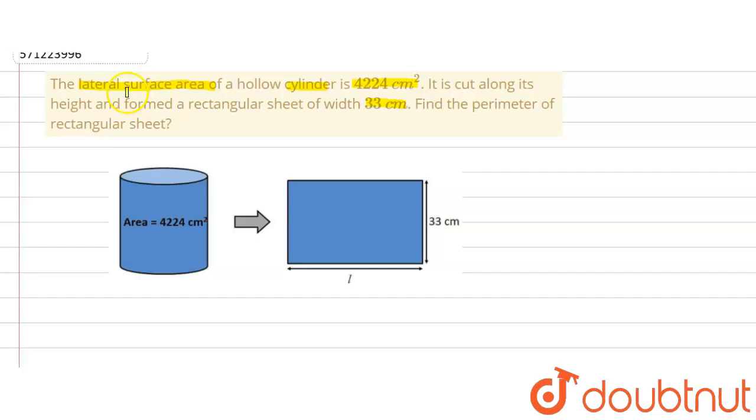So the question says that there is a cylinder like this and it was cut along its height so as to form a rectangle with a breadth or width of 33 cm, and we are supposed to find out the length of this rectangle.